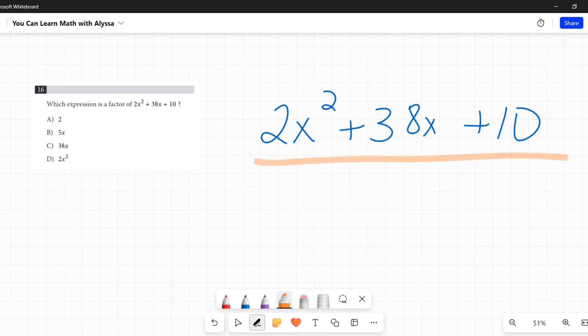They're just asking for a greatest common factor of these three terms. Now this has an x squared, this has an x, but this doesn't have an x. The 10 does not have a variable, so I cannot pull out an x. So right off the bat, honestly, b, c, and d are out because they're saying, can you pull out an x? And you can't.